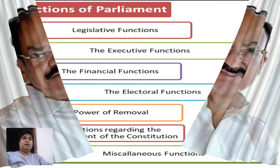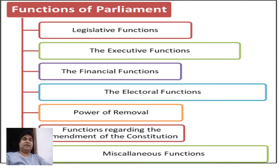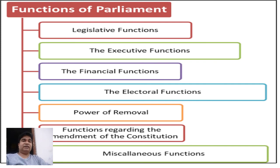Now, some functions of the parliament. First is the legislative function — it makes laws for the whole country. Second is the executive function — it sees whether the laws which are made are followed or not. Third is the financial function — to pass the budget. Fourth is the electoral function — to conduct elections. Fifth is the power of removal — it has power to remove judges and other important officials. Sixth is the function regarding amendment of the constitution — it can also make changes in the constitution. And seventh is miscellaneous functions — other functions.